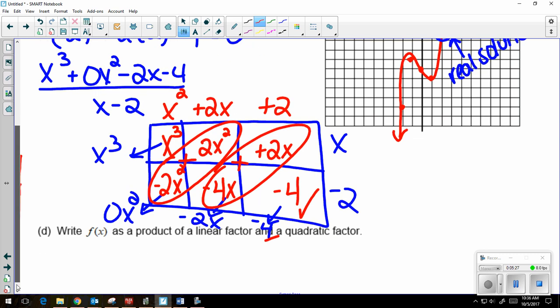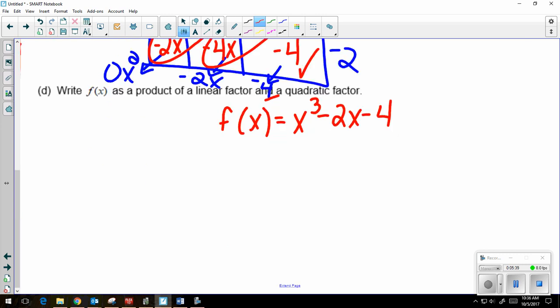Part d says write f of x as a product of a linear factor and a quadratic factor. So f of x, my original function, was x cubed minus 2x minus 4. If I'm going to write this as a linear factor and a quadratic, I'm going to have two parentheses. My linear factor is my divisor, or is that 0 written as a factor instead of a 0. So that's x minus 2. And then my quadratic factor is that quotient, x squared plus 2x plus 2.